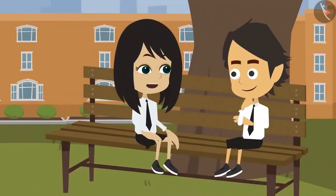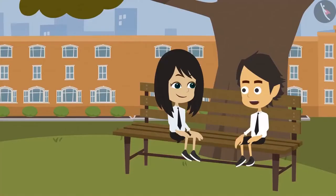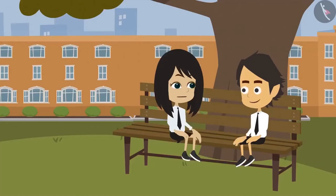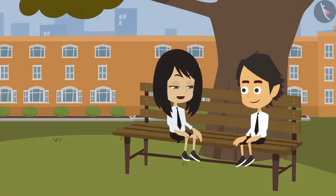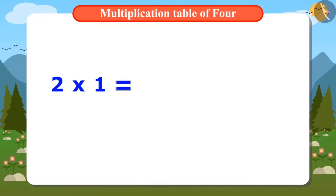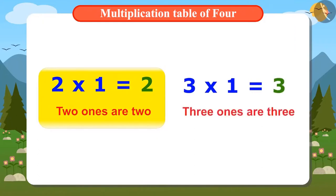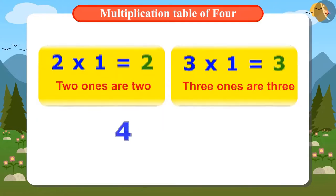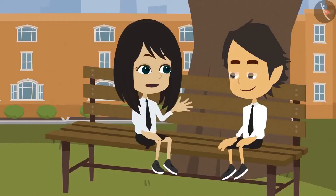Look. To know the first number in the multiplication table of 4, we will multiply 4 by 1. For that, we have to add 4 only once. The answer will be 4. If we add any number once, we get the same number. That's why 2×1 is 2 and 3×1 is 3. That means 4×1 is 4. Now we got to know the first number in the multiplication table of 4. There are 2 ways to find the next number: either add 4 two times or find the 4th number after 4.